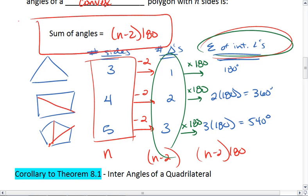The sum of the interior angles of a convex polygon is n minus 2 times 180.